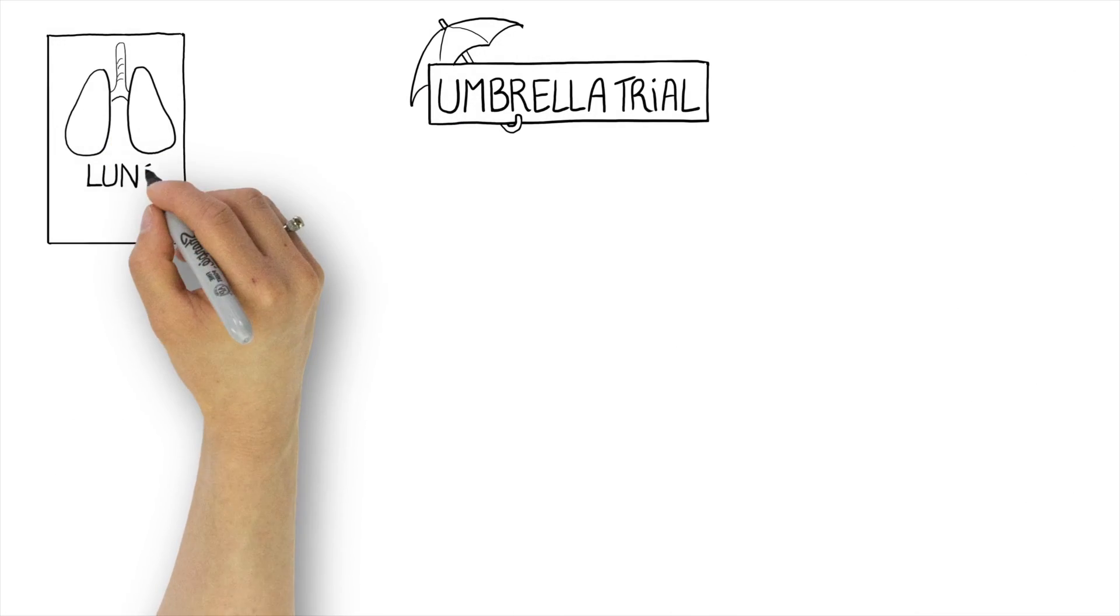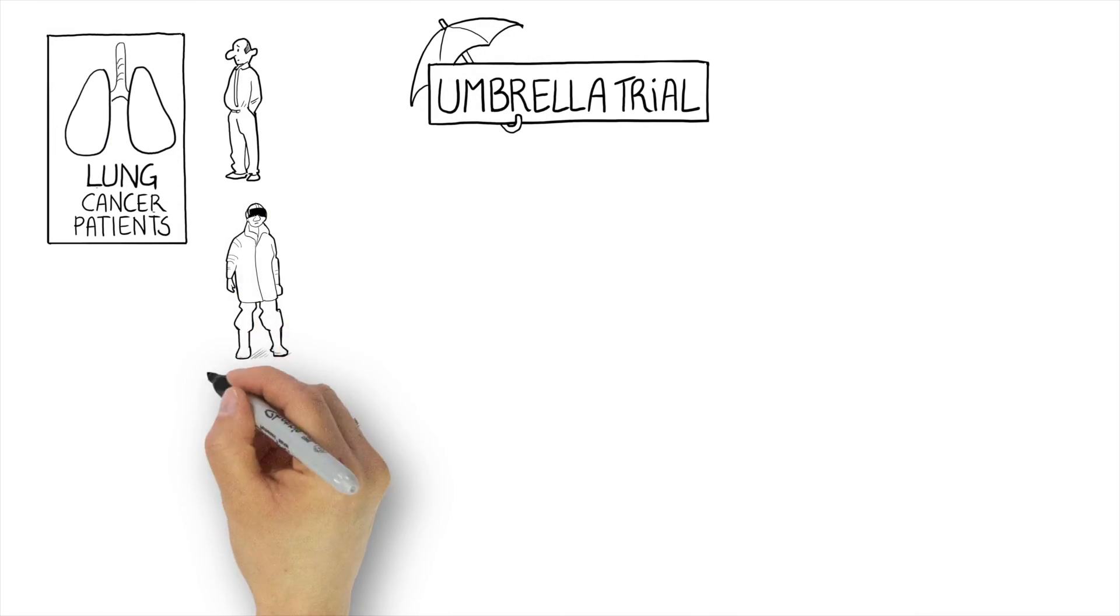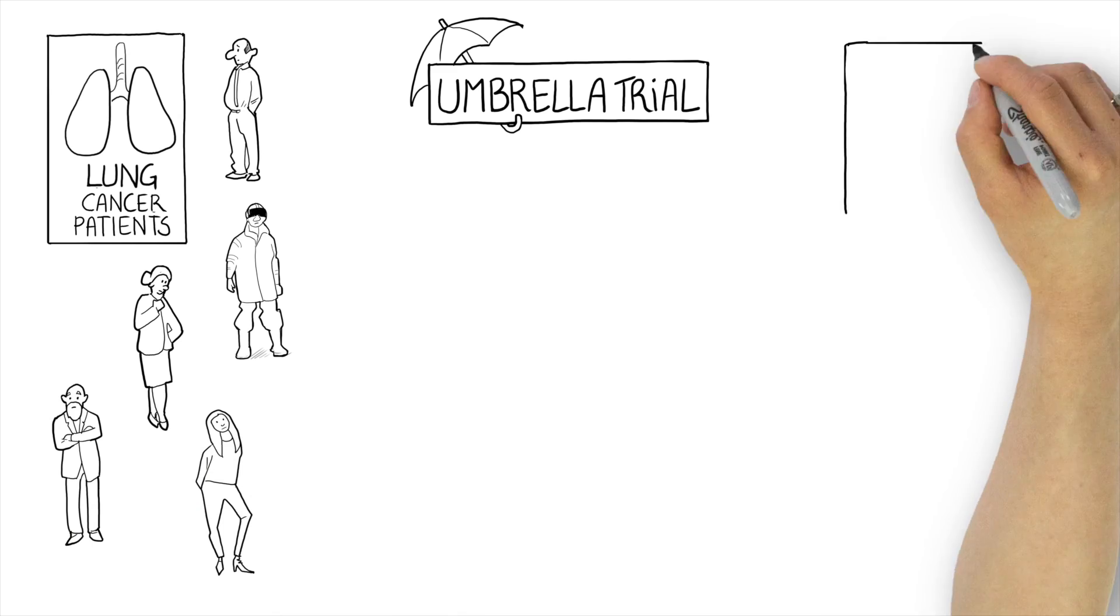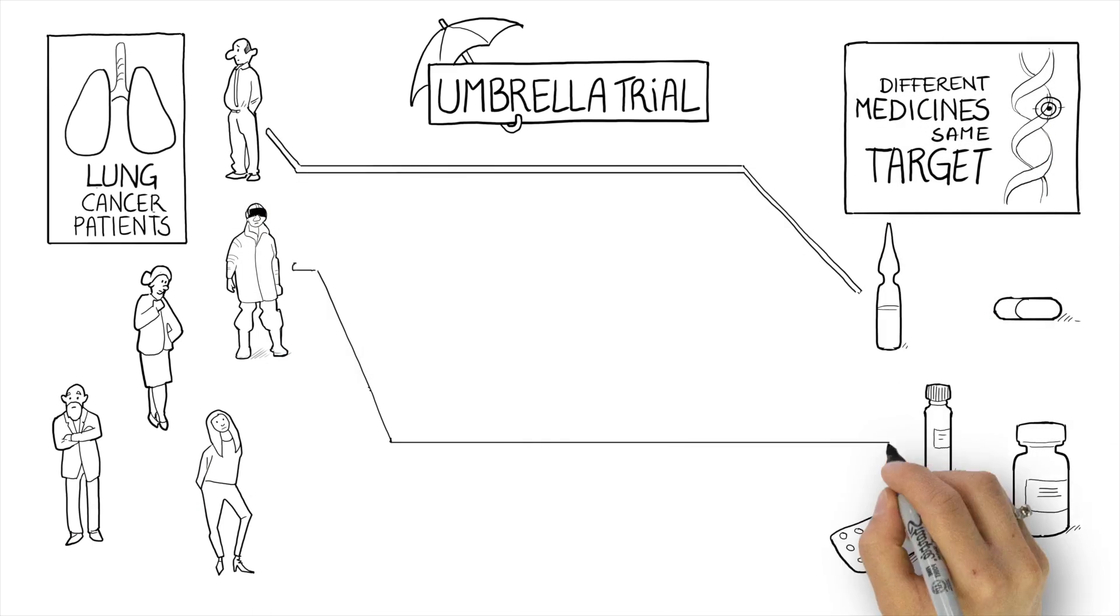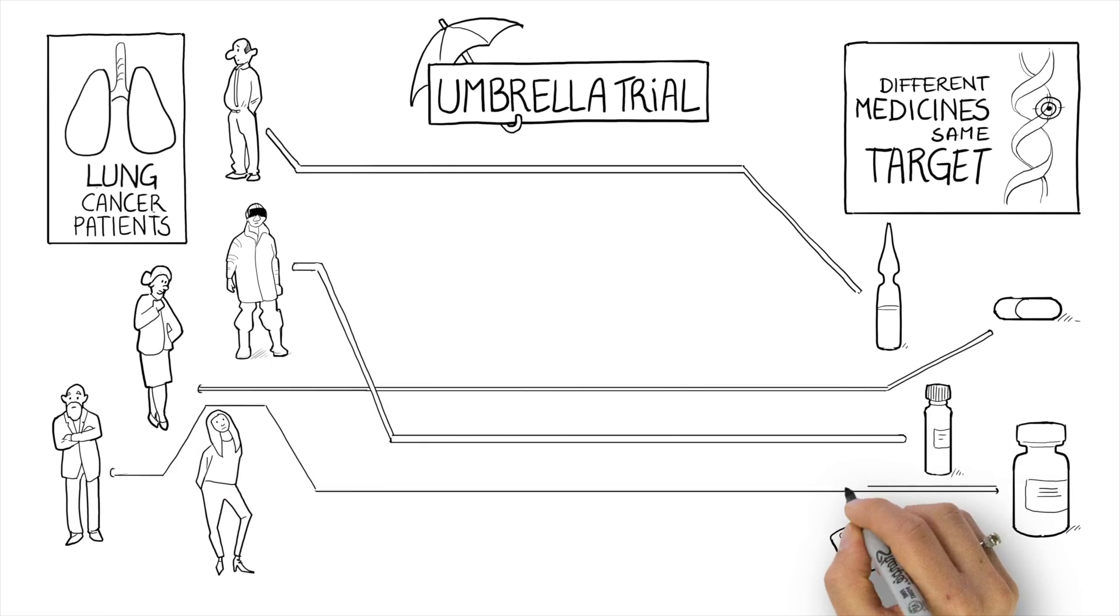In an umbrella trial, patients with a specific type of cancer, for example those with lung cancer, are treated based on the mutation most prominent in their tumor, with one of a number of different medicines that target this specific mutation.